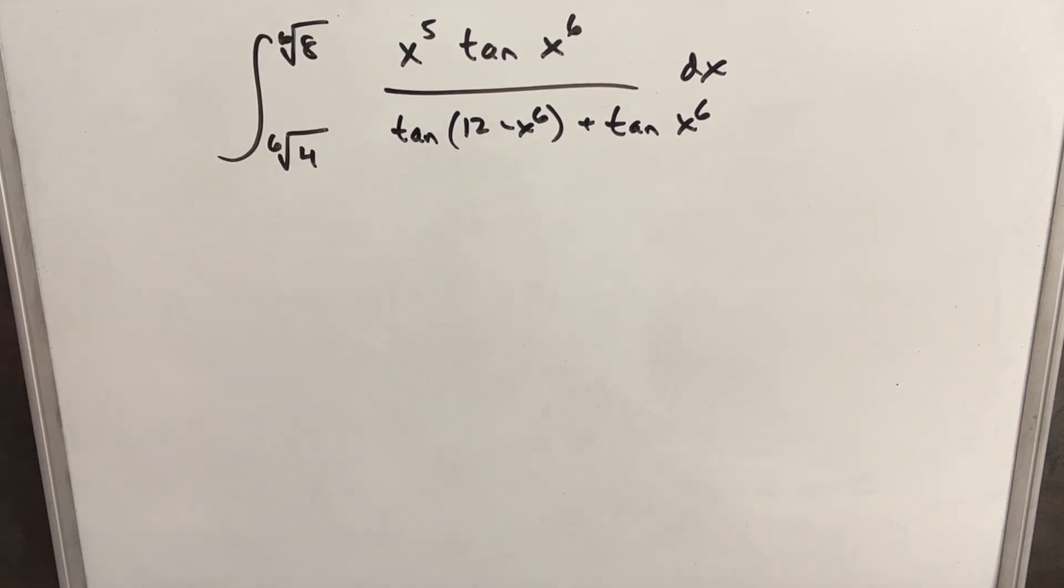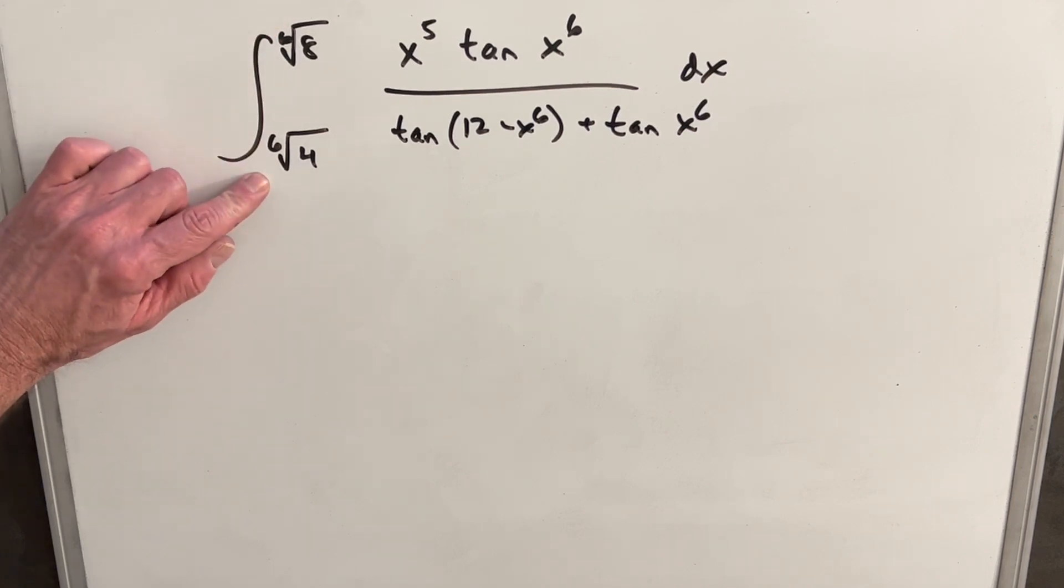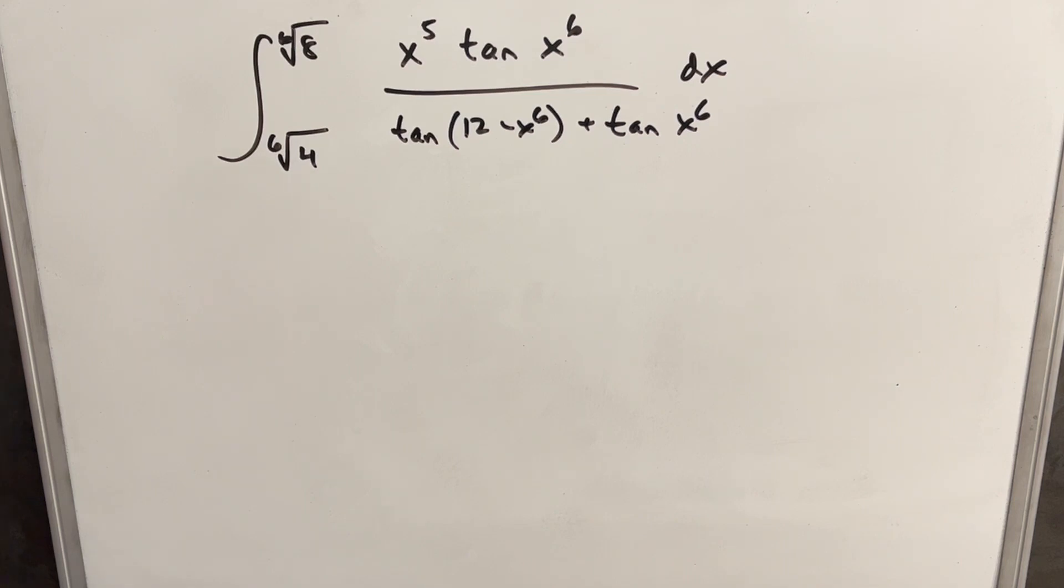Hey, we have on the board a very complicated looking integral. Today we're integrating from the sixth root of eight to the sixth root of four. Then we have x to the fifth tan x to the sixth over 12 minus x to the sixth plus tan x to the sixth dx. Okay, that's a lot of stuff.